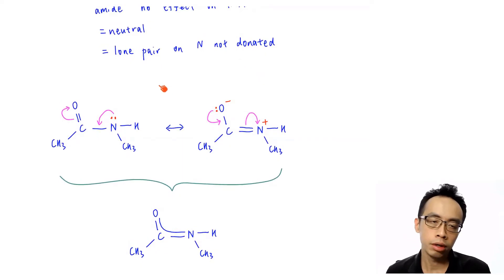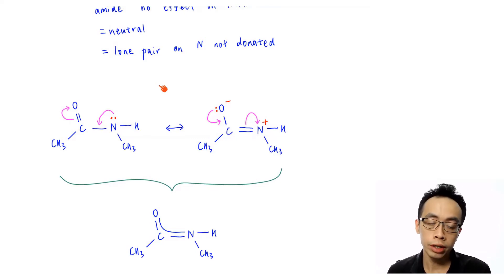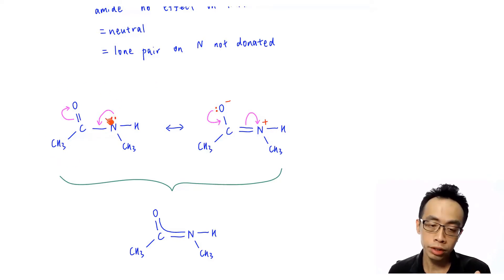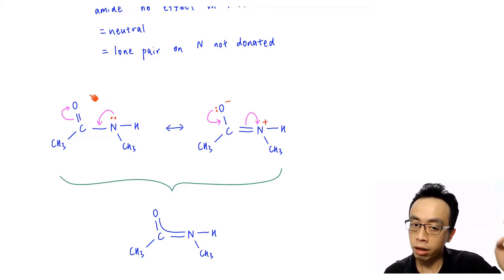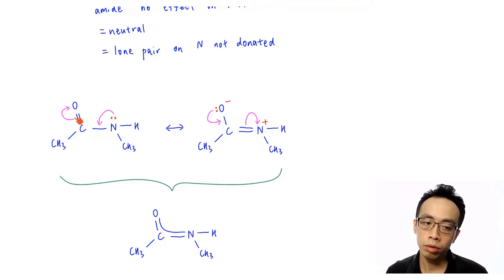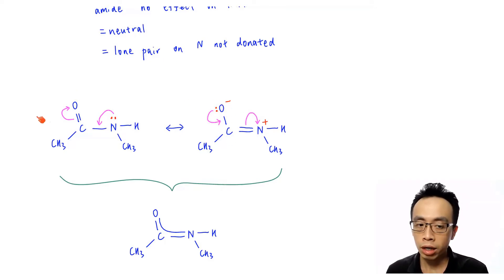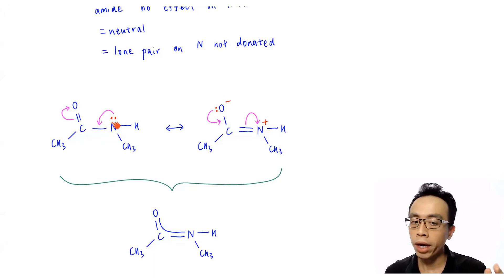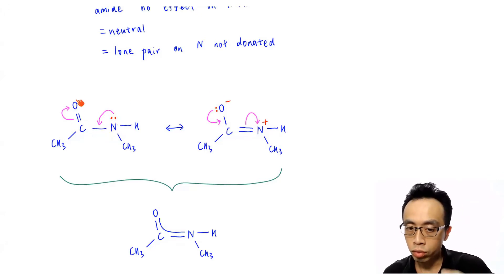We can draw the resonance structures of the amide to see that the lone pair can be delocalized into the acyl group. Looking at the structure on the left-hand side, there's a lone pair on the nitrogen. This lone pair can draw an arrow from nitrogen and form a double bond between carbon and nitrogen, giving a C=N bond, while opening up the pi bond between carbon and oxygen — both electrons go to oxygen, so the C=O double bond becomes a single bond and oxygen becomes negatively charged. So the lone pair on nitrogen is delocalized and goes to oxygen.